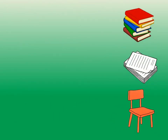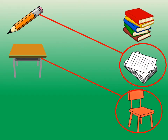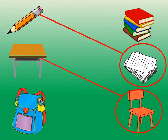Let's match some more items. First, we have a pencil — who do you think it matches with? Yes, the paper, so that we can write on it. Now we have a desk that you sit at. What do you think it matches with? Yes, the chairs, so that we can sit at our desks.